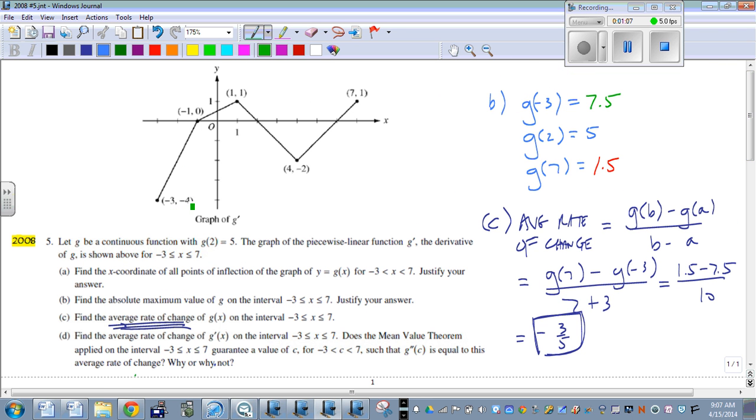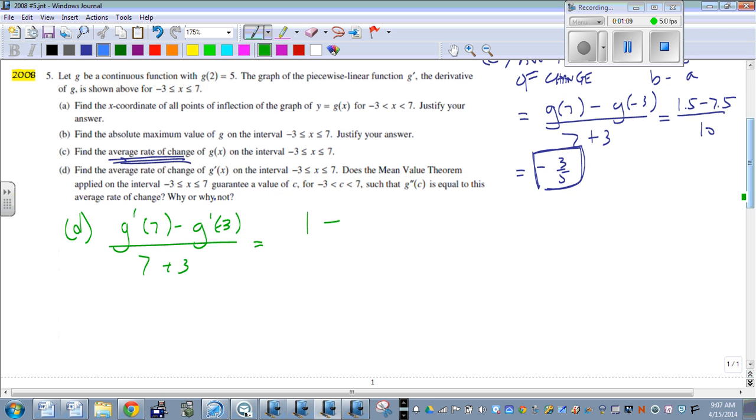Put negative 3 in, we get negative 4 out. So we have 1 minus negative 4, or plus 4, all over 10. So we get 5 over 10, or 1 half.